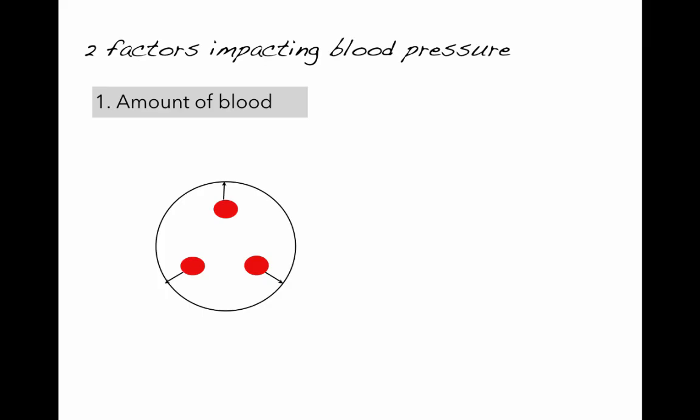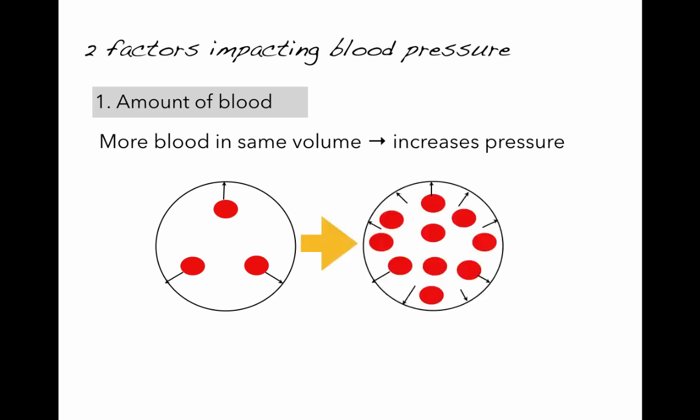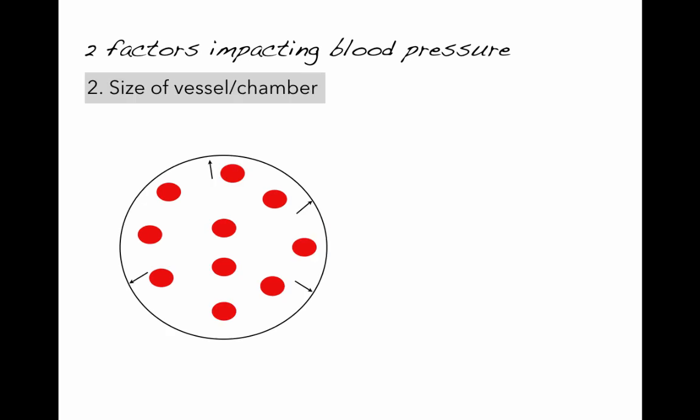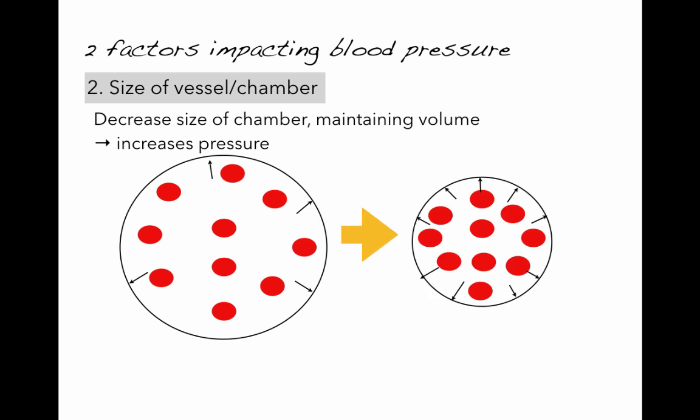For the purpose of this video I'm going to discuss two main factors that impact blood pressure. The first is how much blood is in the chamber — adding more blood in the same volume increases the pressure. The second factor is the size of the chamber. If we decrease the size of the chamber but maintain the volume of blood, this is going to increase the pressure. Just changing the size of the chamber without changing the blood volume increases pressure.